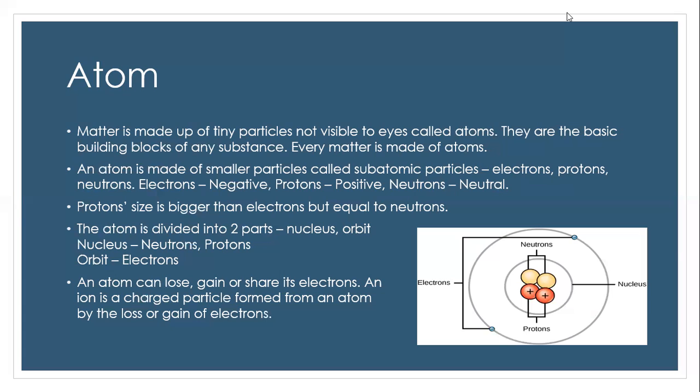And how can we view the subatomic particles, you might be wondering about that. And the answer is that we cannot view them by a normal microscope. Also, atoms are so small they need something called electron microscope. Proton size is bigger than electrons but equal to neutrons.